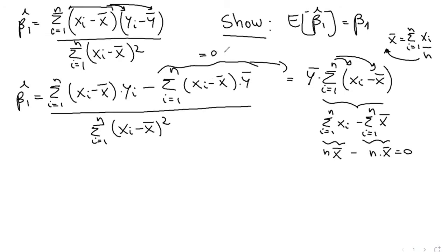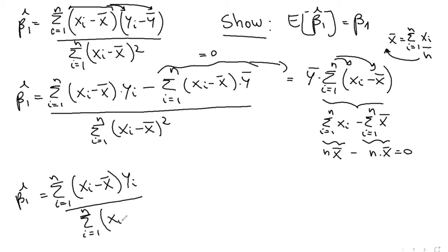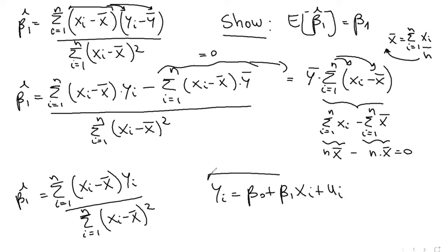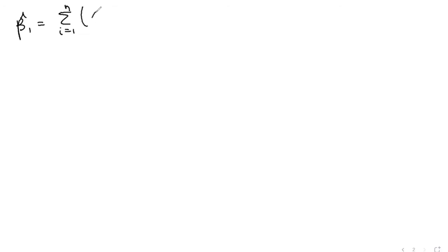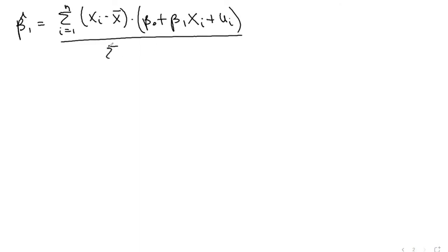So that entire term is equal to 0, which simplifies our formula for β̂₁. Now, all we have to remember is that yᵢ is given by the linear regression: yᵢ = β₀ + β₁xᵢ + uᵢ. So we plug this in, giving us β̂₁ equals the sum from i equals 1 to n of (xᵢ minus x̄) times (β₀ + β₁xᵢ + uᵢ), all divided by the sum of squares of x.